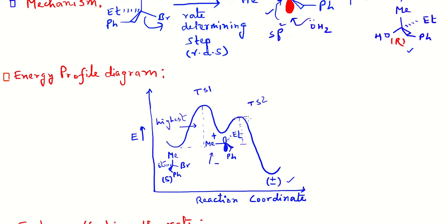In the first step, a stable molecule (the halide) is converted into the unstable carbocation, so the activation energy for the first step is high. Since the unstable carbocation is then converted into the stable product, the activation energy for the second step is very low. This gives the overall two-humped energy profile diagram for the SN1 reaction.